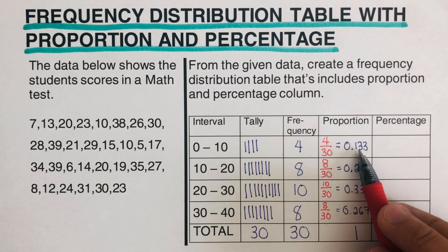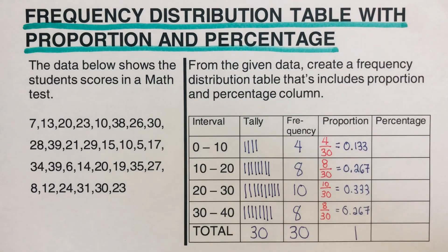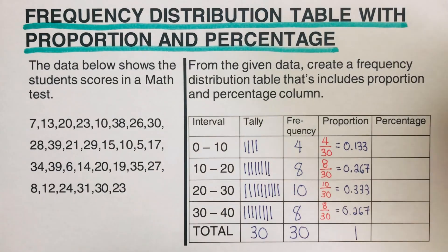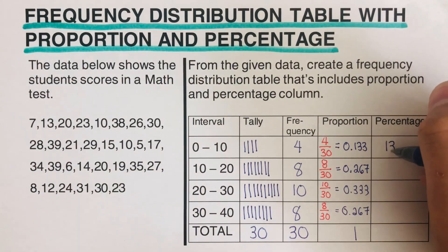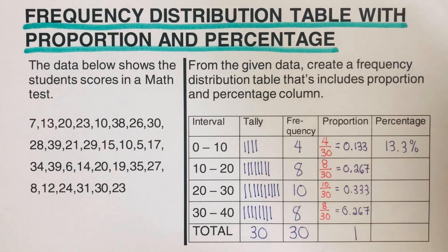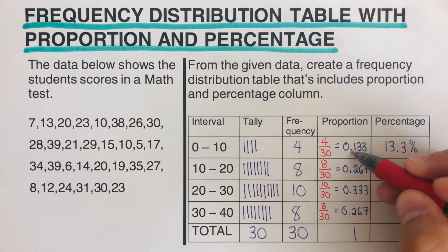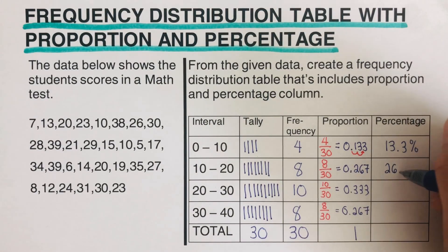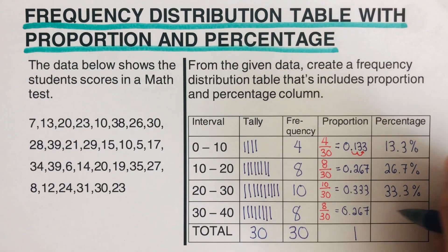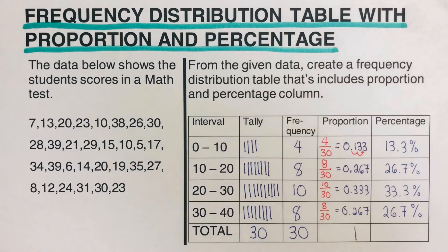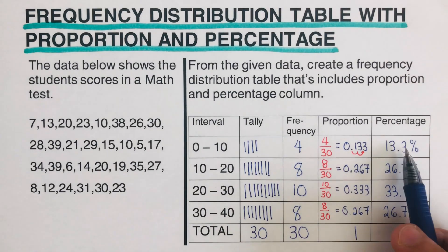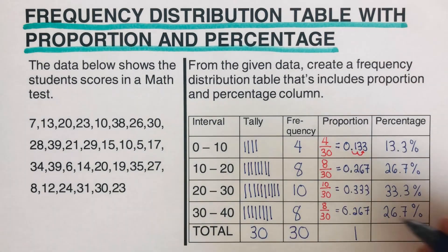To fill in the percentage column, we multiply each proportion by 100. So 0.133 times 100 equals 13.3 percent — essentially we move the decimal point two places to the right. I'll do the rest of them. When we add all the percentages together, they should give us 100 percent.